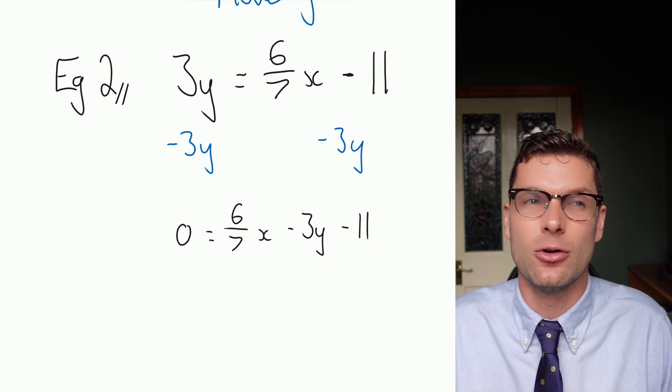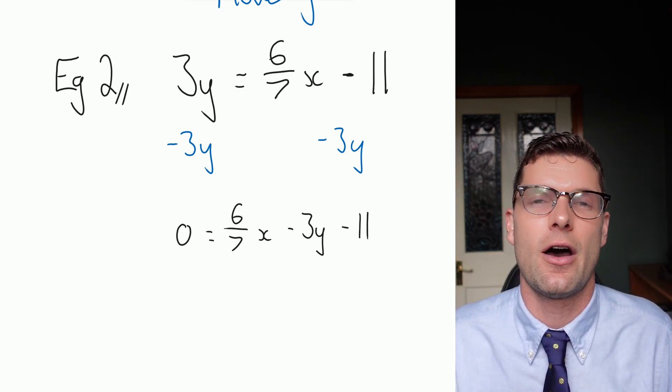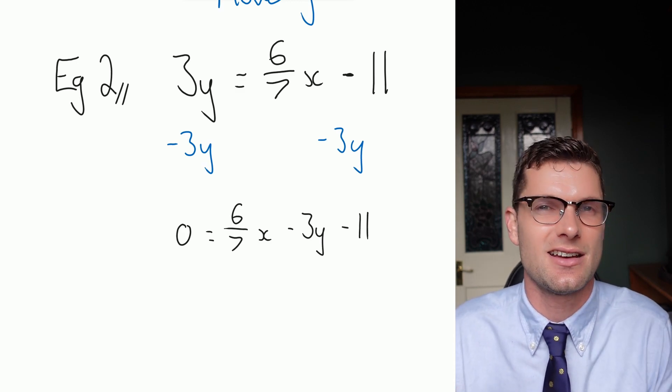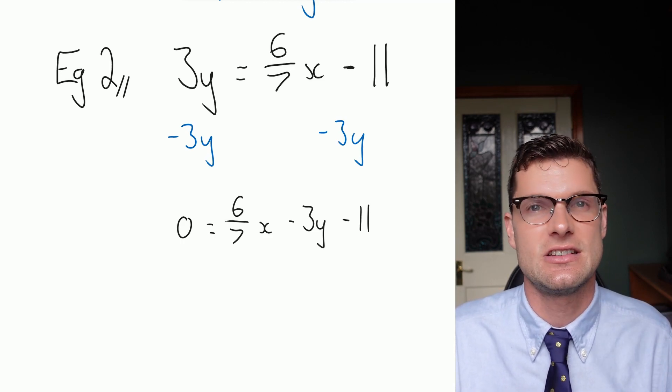Remember, because they're equal, I can just switch them around. It doesn't matter which side you write them on. This is totally fine for now. But for that final answer, let's have the zero on the right hand side. So here I've got a fraction, obviously, 6/7.